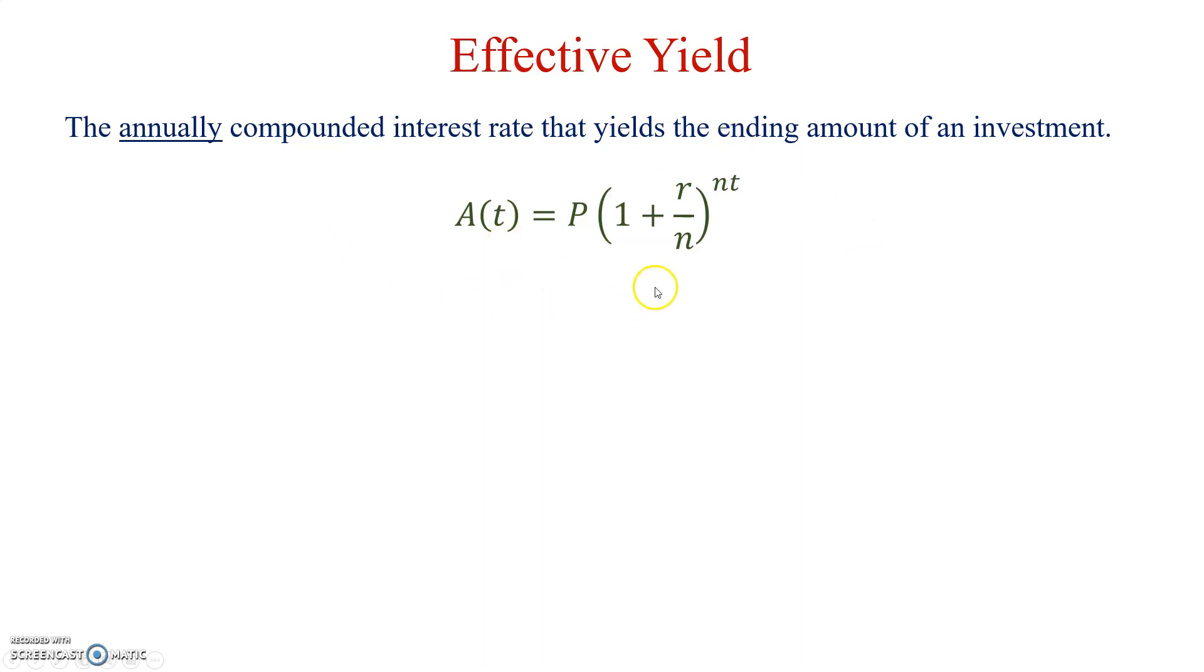If we look at the original formula we worked with earlier, in this particular case, A(t), P, and T are going to be given. The N, in this case, the number of times will always equal 1. That's why in the definition, the annually compounded interest rate. So N will always equal 1. In this case, we'll be solving for R. So, effective yield, the goal is to determine the rate. Rate is considered effective yield. The final answer is always a percentage.